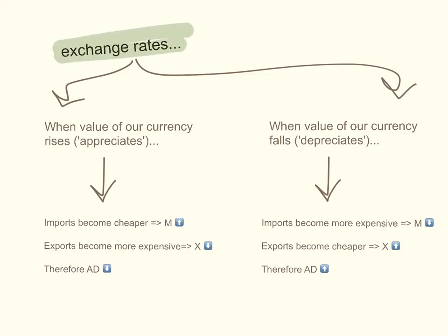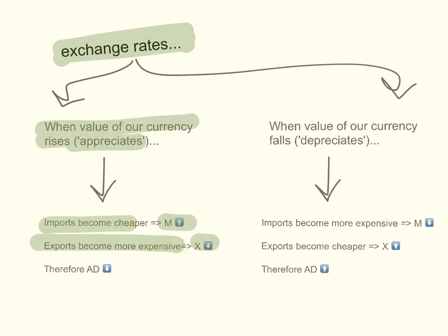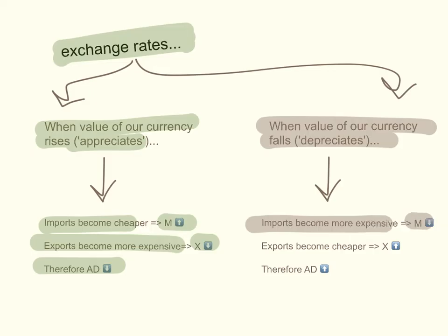Exchange rates also have a very strong effect on net exports. When the value of our currency rises, we say that our currency has appreciated in value. Imports become cheaper, therefore we tend to import more. Exports become more expensive for foreigners buying our goods, so our exports will decrease. Therefore, aggregate demand will decrease — that's the net effect, because an increase in imports is recorded as a negative. And the opposite is true: if the value of our currency falls, it depreciates. Imports become more expensive, so imports decrease, and exports become cheaper. Foreigners will find our goods and services cheaper, so we will export more, and therefore aggregate demand will increase and the aggregate demand curve will shift to the right.